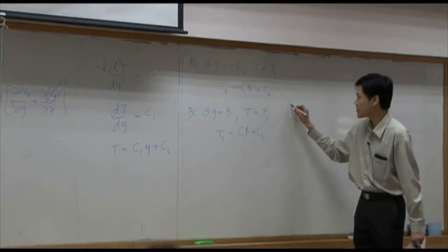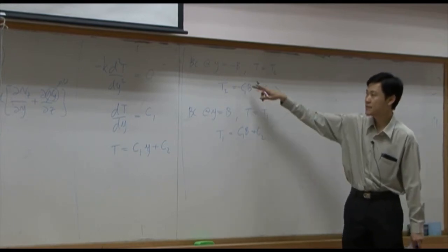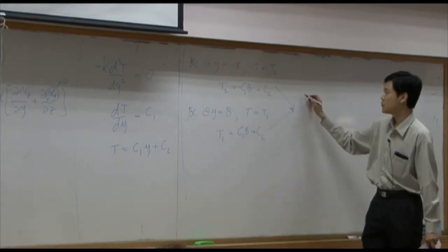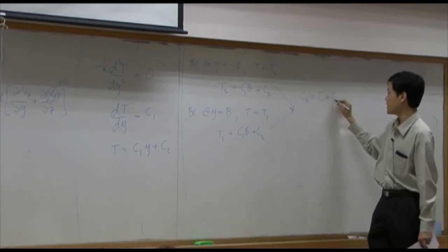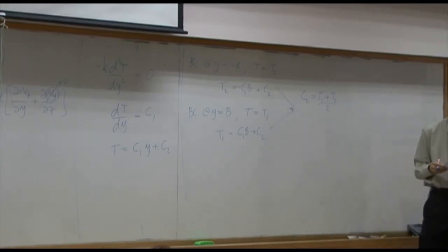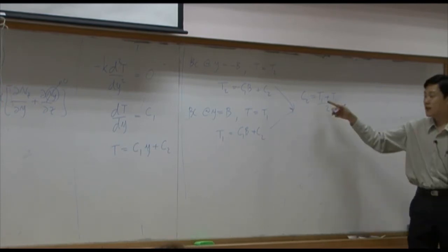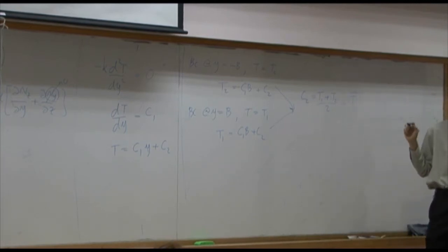If you add these two equations together, C1 will be dropped. You'll get C2 equal to T1 plus T2 over 2, and temperature T1 plus T2 over 2 is basically average temperature.